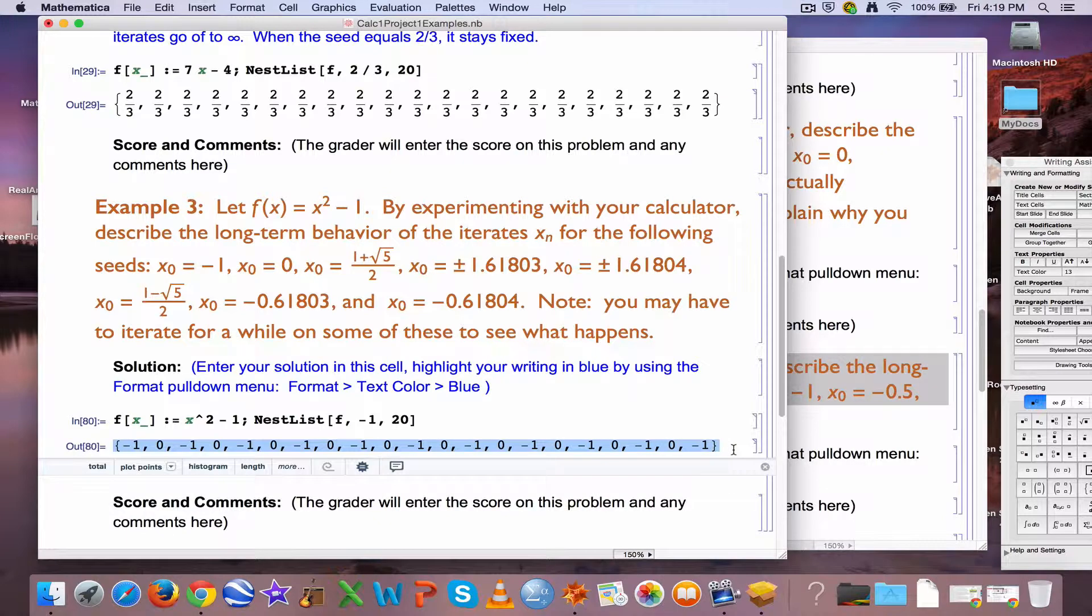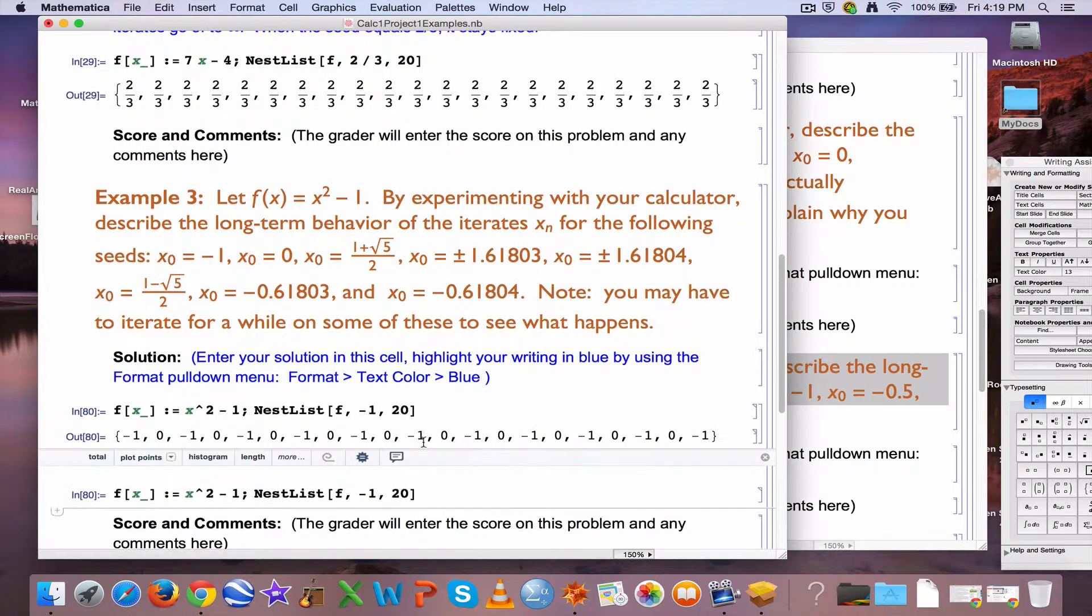This is called a cycle of period 2. It's a periodic kind of thing, just like a cosine or sine is periodic. This is periodic, but it's a discrete kind of periodicity rather than a continuous kind. So both negative 1 and 0 are going to generate these cycles of period 2.